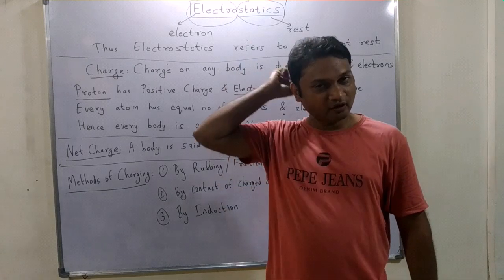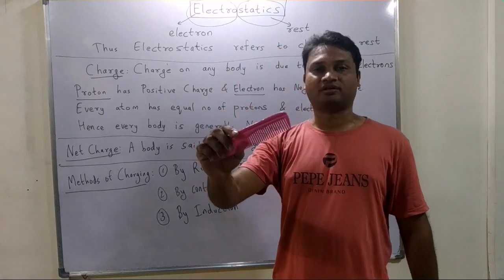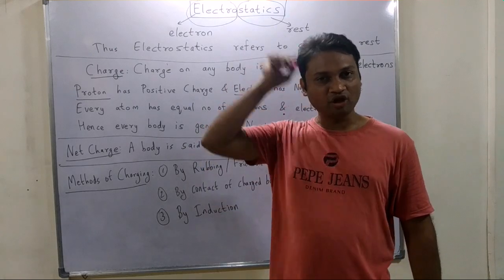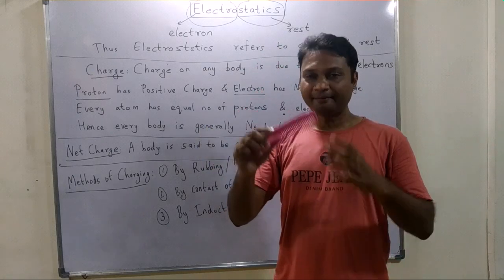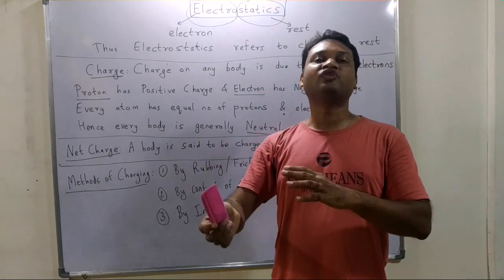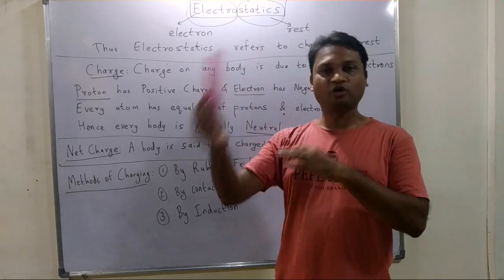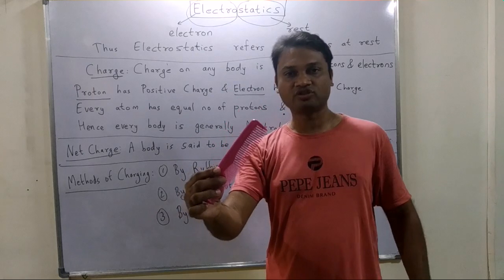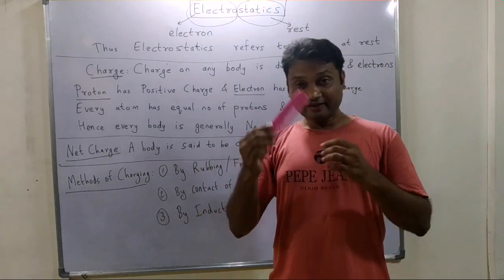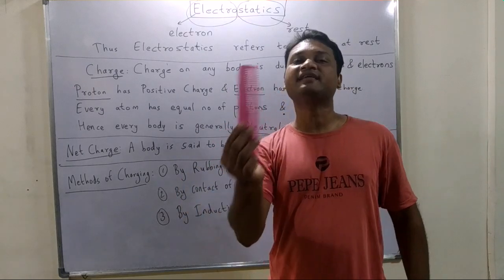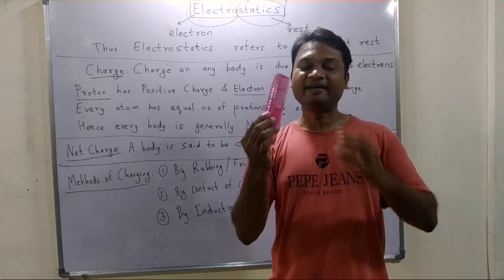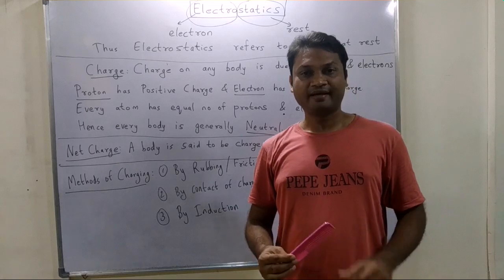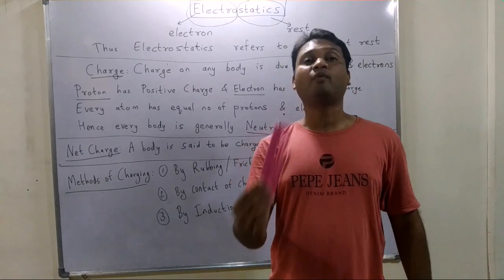When we comb our hair, there is friction — rubbing between atoms of the comb and atoms of the hair. In that process, there is a transfer of electrons from either hair to comb or comb to hair. If the comb has an excess of electrons, it becomes negatively charged. If the comb has a lack of electrons, it becomes positively charged.